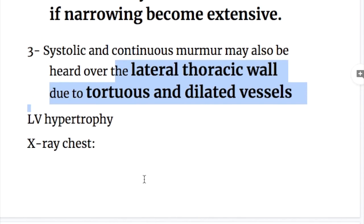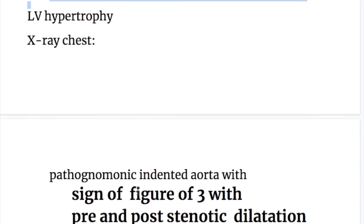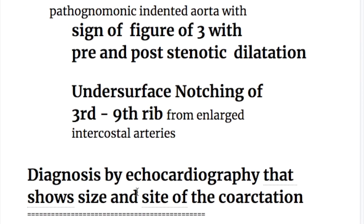There is left ventricular hypertrophy. On chest X-ray, there is a pathognomonic indented aorta with a figure-of-three sign, showing pre- and post-stenotic dilatation. There is also undersurface notching of the third to ninth ribs from enlarged intercostal arteries.